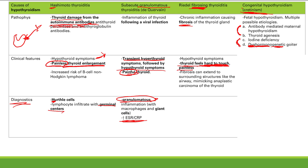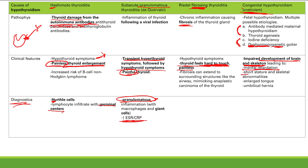How does congenital hypothyroidism present? Thyroid hormone is critical for CNS maturation and skeletal development, working together with growth hormone. Low thyroid hormone causes impaired brain and skeletal development, presenting as mental retardation, short stature, and skeletal abnormalities. You also see enlarged tongue and umbilical hernia.